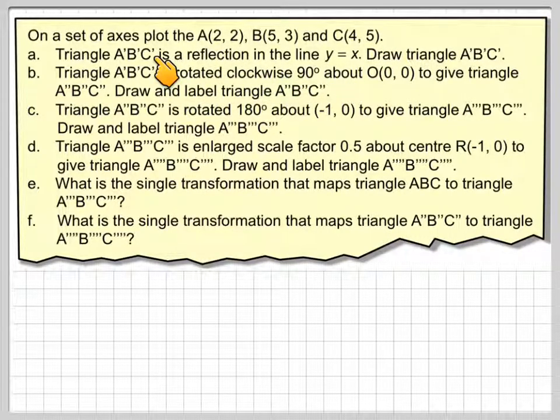Triangle A'B'C' is a reflection in the line Y equals X. Draw the triangle A'B'C'. Triangle A'B'C' is rotated clockwise 90 degrees about the origin (0, 0) to give triangle A''B''C''. Draw and label the triangle A''B''C''.